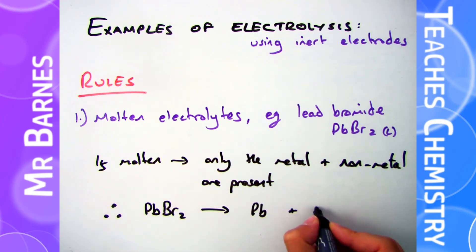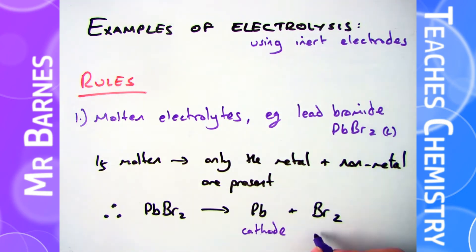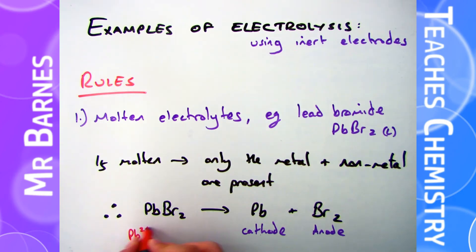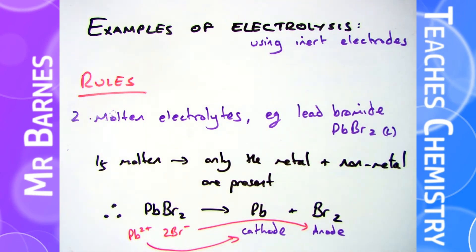So the lead bromide will be split into lead and bromide ions. The lead, which is a cation, will go to the cathode and turn back into lead, and the bromide will move to the anode and turn back into bromine.